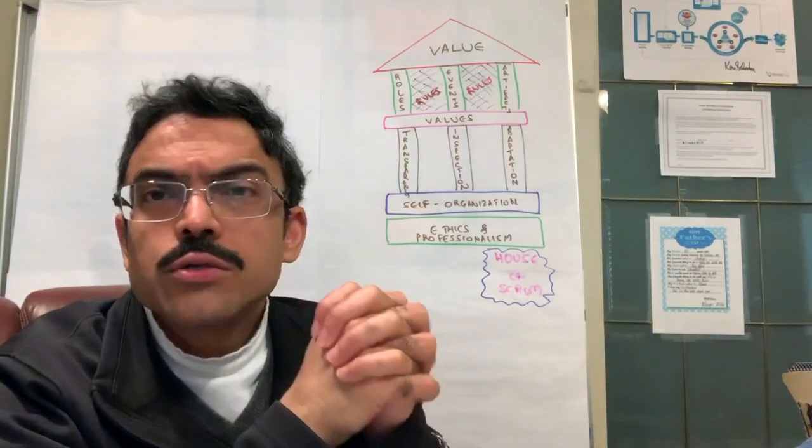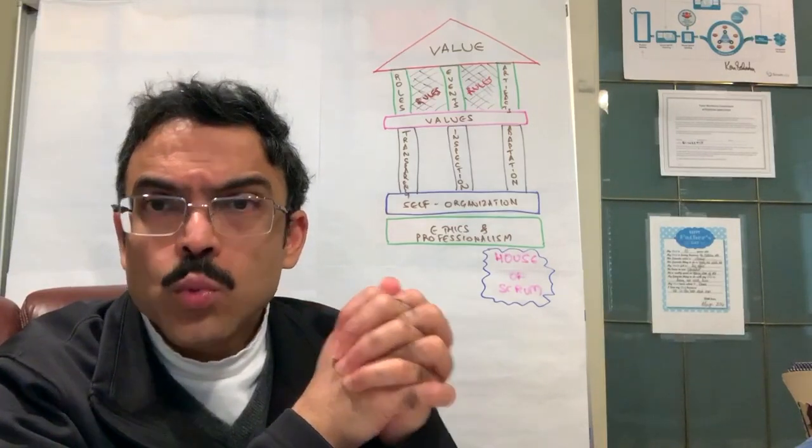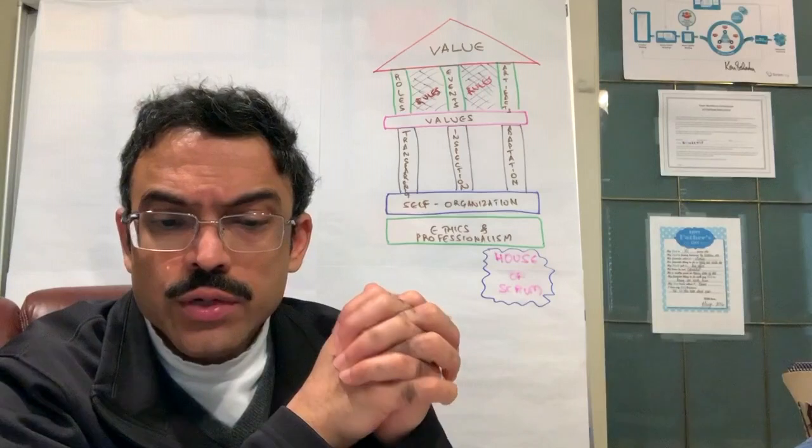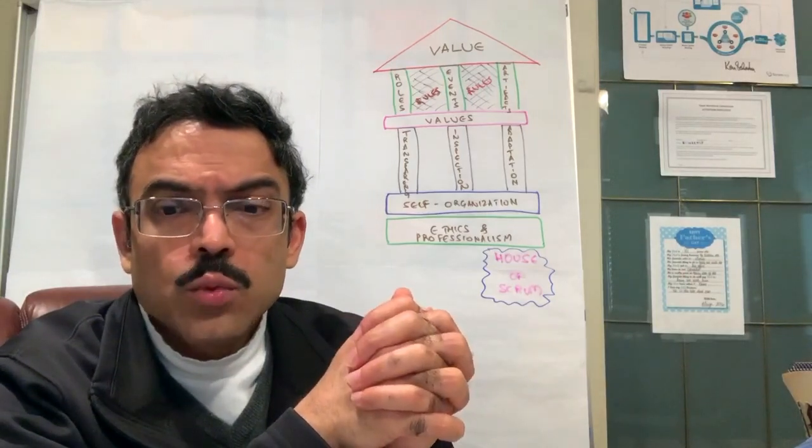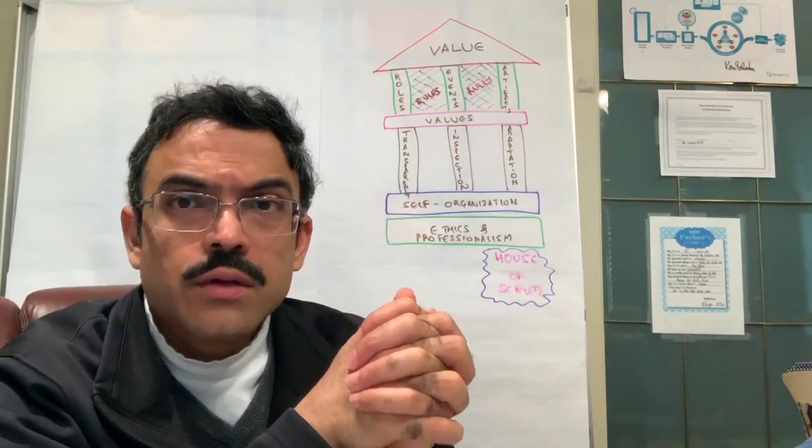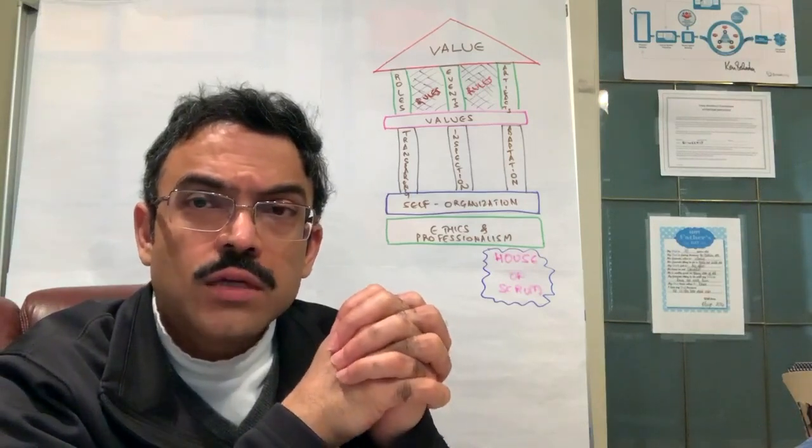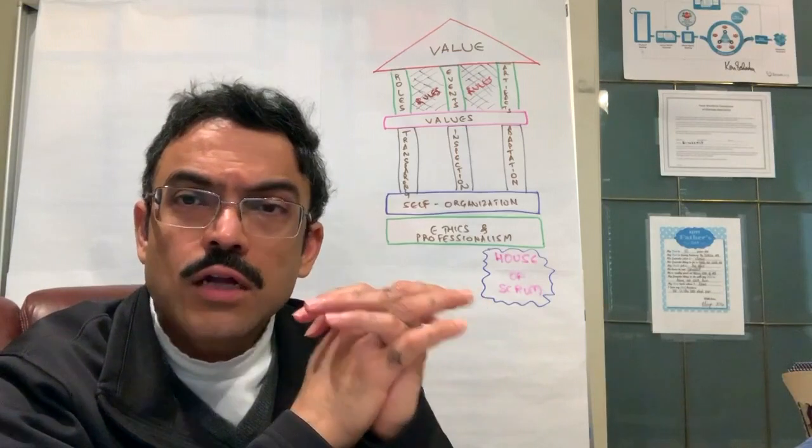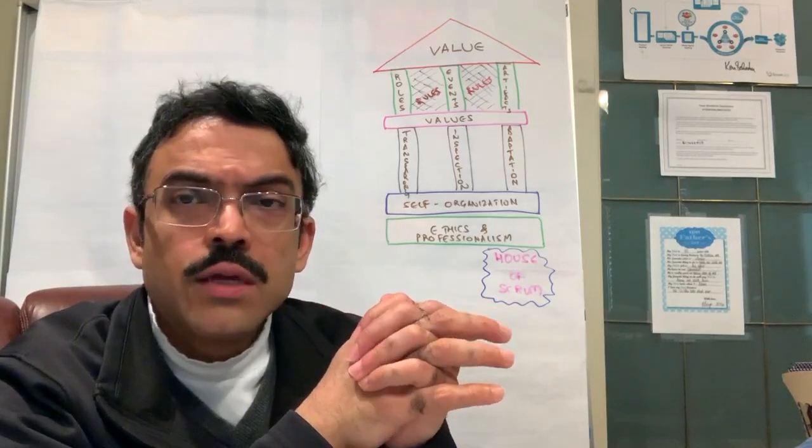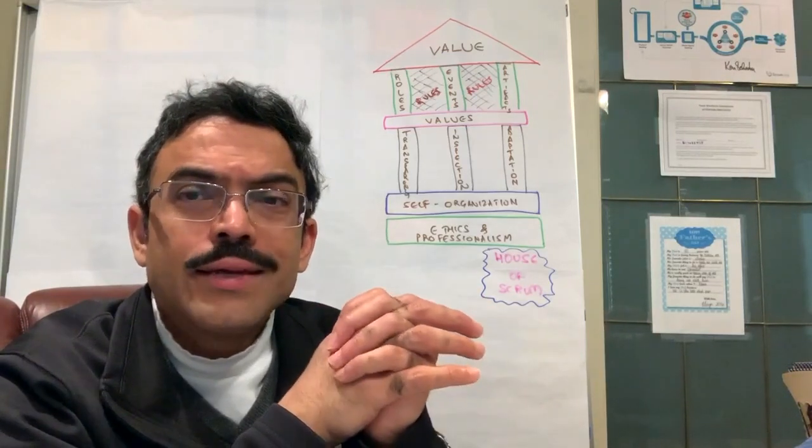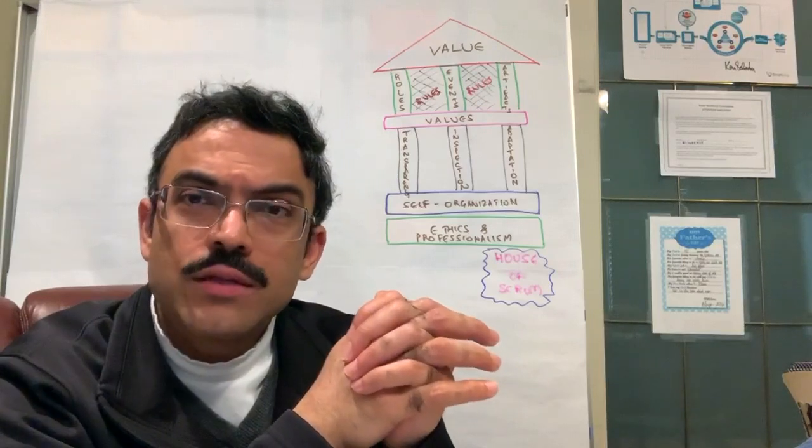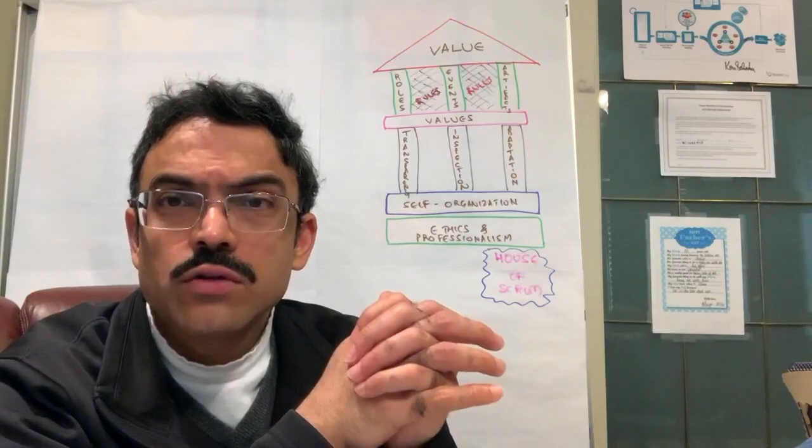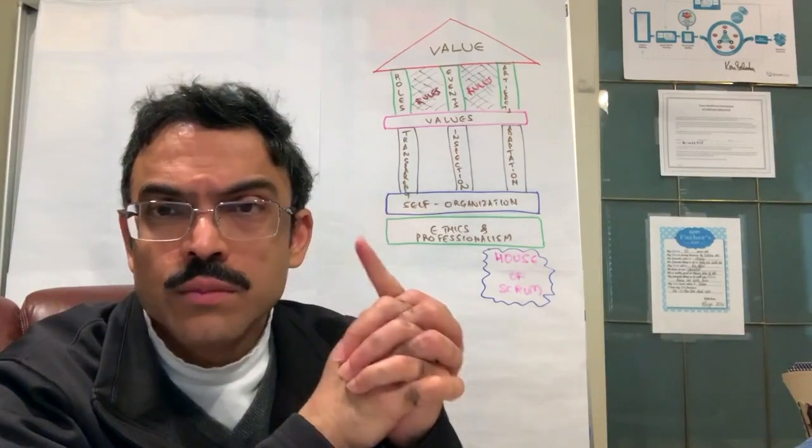So what is the call to action here? Number one, if you are a member of a Scrum team and you are watching this video, I would like you to look in the mirror and ask yourself: are you holding yourself to the highest standards of ethics, professionalism, and the culture of Scrum values? And are you constantly inspecting? Are you behaving in a way that is in alignment with the letter and the spirit of Scrum in service of your shared team goal? That's action one.